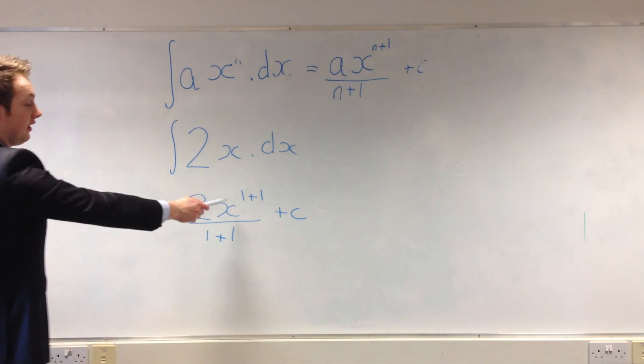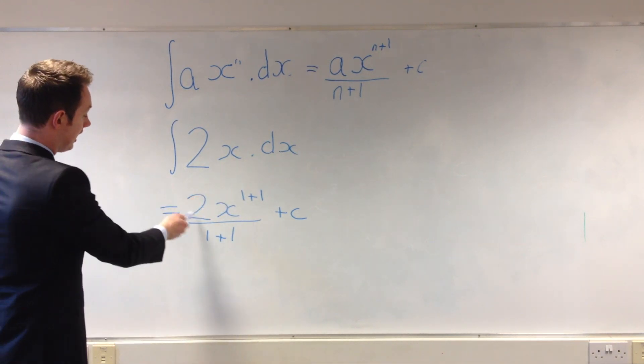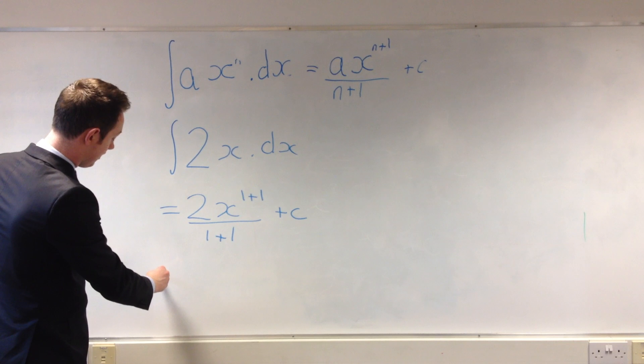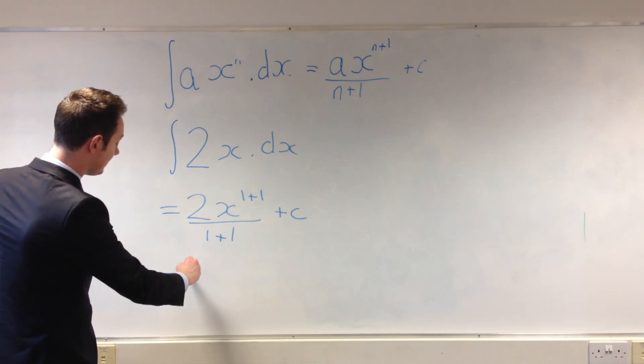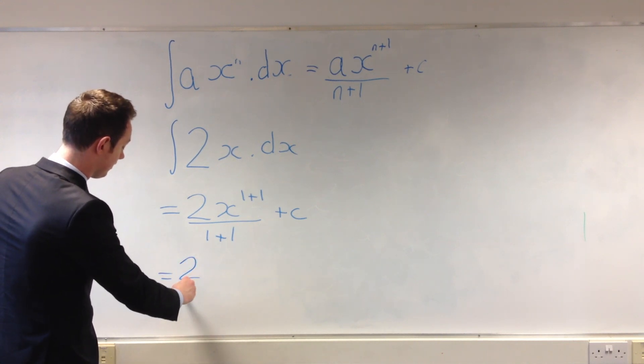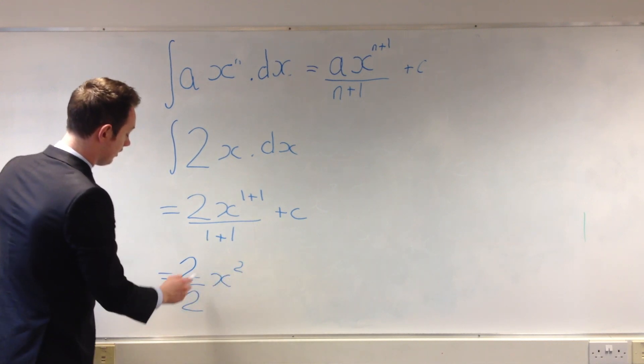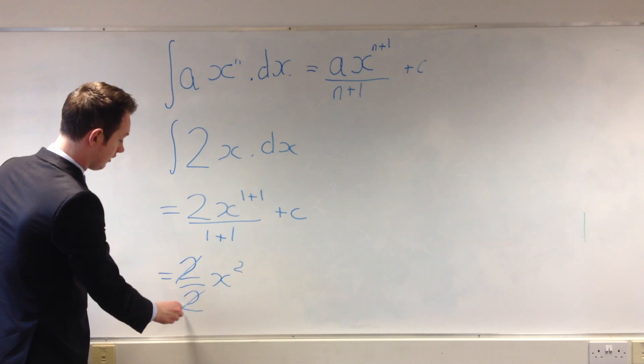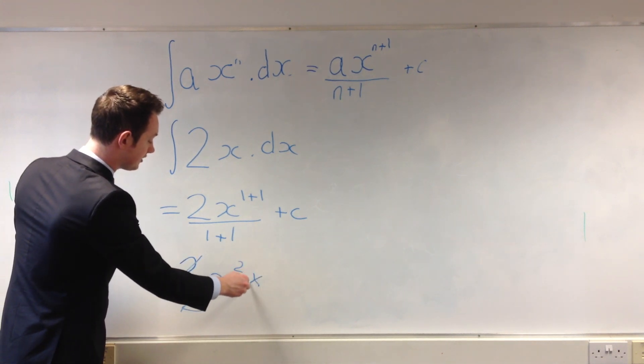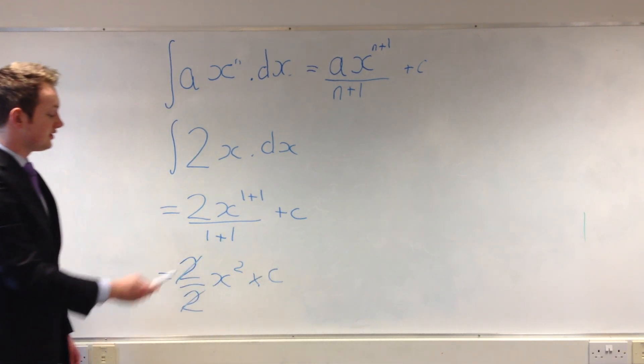Now obviously, 1 plus 1 is 2, and the same here. So we can cancel out the 2 and the 2. And this will leave us x squared plus c.